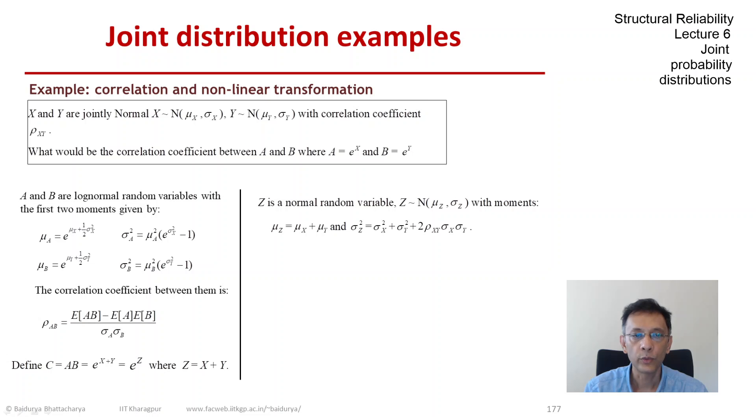If rho was zero, if x and y were independent, then we would just have the sum of the variances as the variance of the sum. Because we assert that z is normal, exponential of z, which is c, is log-normal. We can find the mean of c. That's what we actually need - expectation of ab is expectation of c, and if we knew that then we could compute rho of ab.